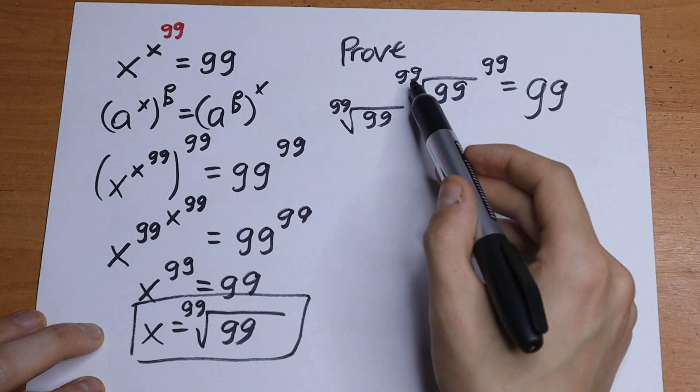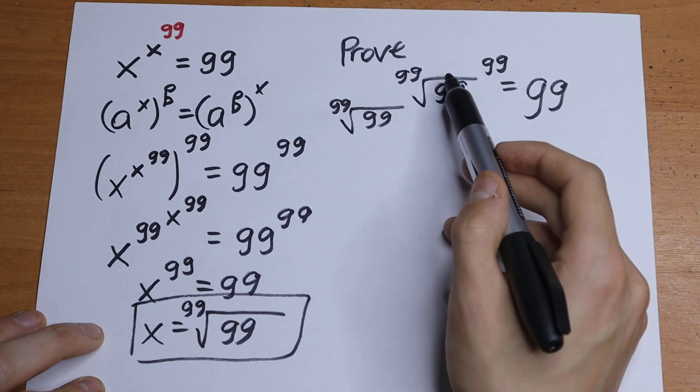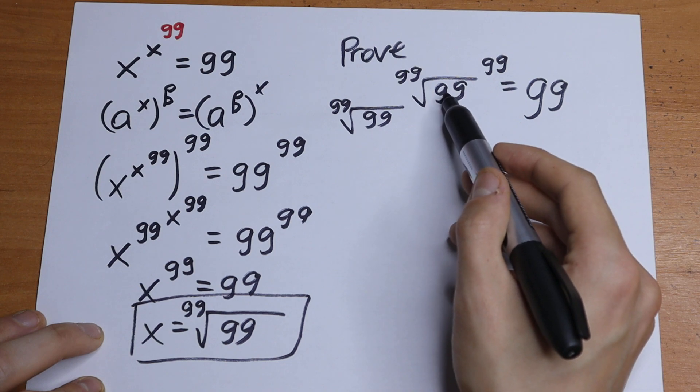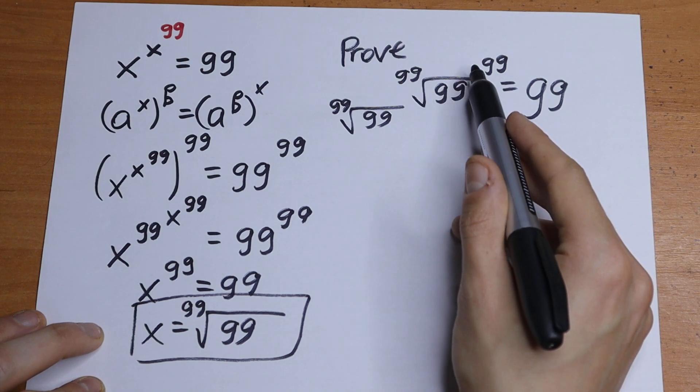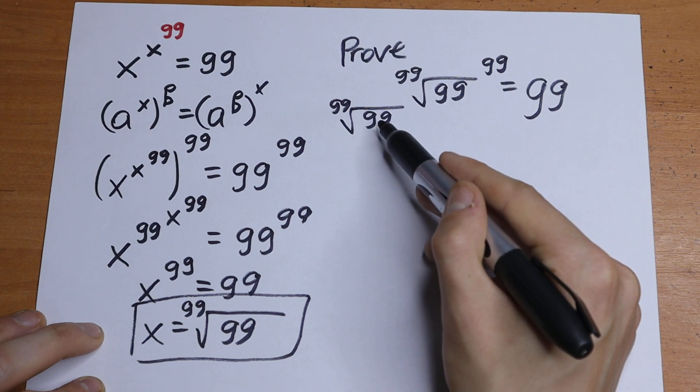Let's try to simplify this. If we have 99th root and raised to the 99th power, we will have only 99. The same case with this square root.